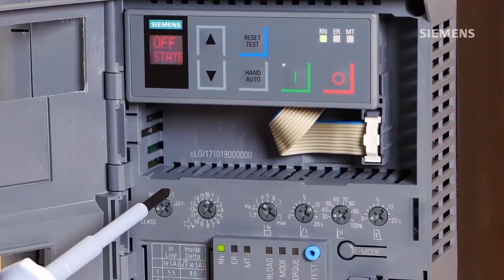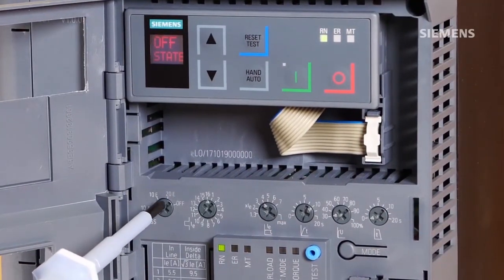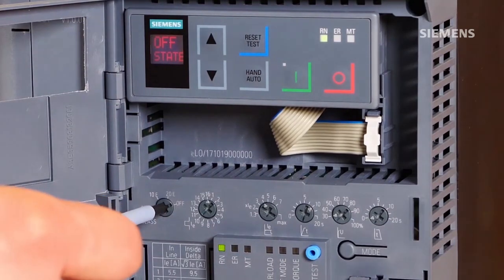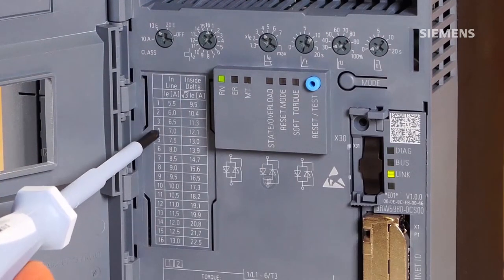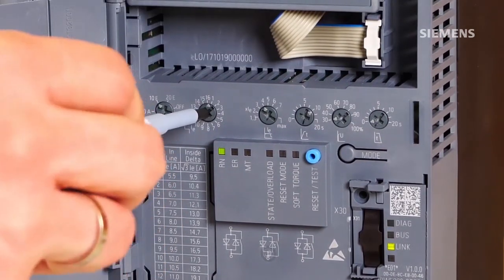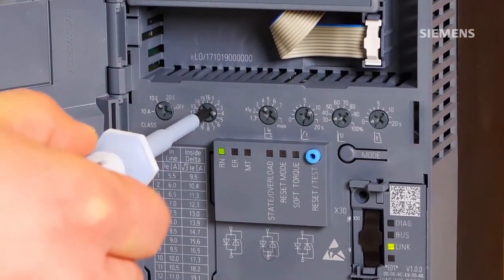With the first rotary coating switch you set the characteristic of the integrated electronic motor overload protection. The rated current of the motor is 7 amperes. According to the table inscription on the device, you need to select 4 with the second rotary coating switch.